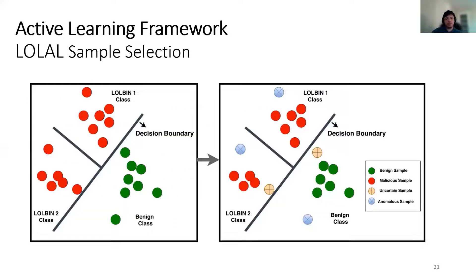Uncertain samples are defined as samples that the classifier is not confident in its assignment — at least two classes have a low margin between the prediction probabilities, meaning those samples are close to the decision boundary. Anomalous samples on the other hand are samples that are outliers within the predicted class. Uncertain samples are used to correct the decision boundary between classes, and anomalous samples can uncover new interesting behavior that could be used to discover new classes of attacks. We choose multi-class classification to separate different classes of malicious behavior, which is useful for identifying anomalies per class after classification. The analysts can choose to assign more fine-grained class labels for each sample in a deployment setting.